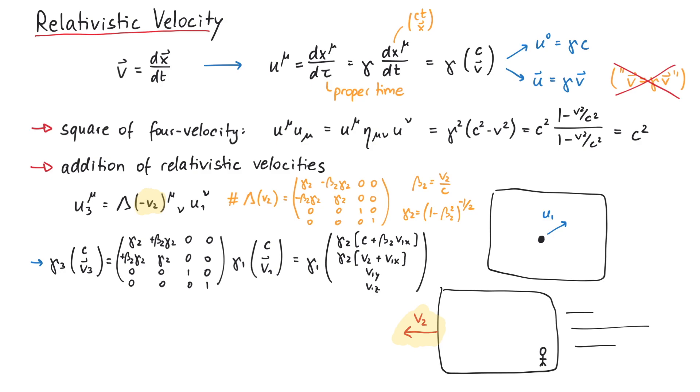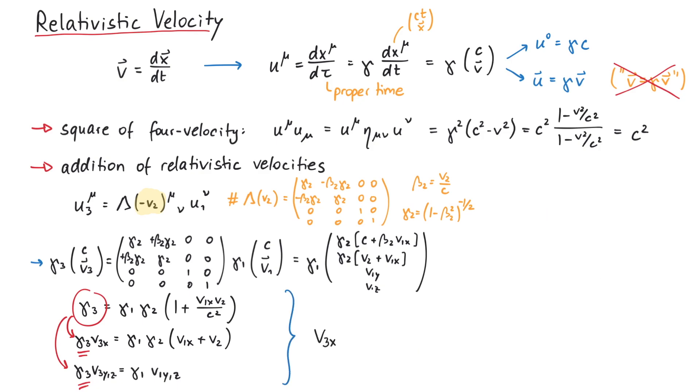If we write the four components of the four vectors separately, we get these four equations. The first one gives us a way to express gamma 3, which enables us to remove it from the rest of the equations by dividing by gamma 3. This result corresponds to the well-known equations for the addition of relativistic velocities.